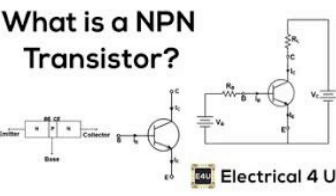The 2N2222 transistor remains a popular and widely used component in electronic circuits due to its low cost, high reliability, and versatility. Its practical applications include: Amplifiers — the transistor can amplify signals in low-power audio and radio frequency applications, such as in small audio amplifiers or oscillator circuits. Switching Circuits — the transistor can be used as a switch to turn on or off electronic circuits, such as in LED drivers or relay control circuits.